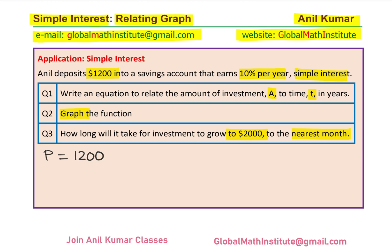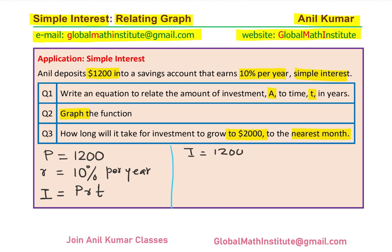Into a savings account. Now, the rate of interest is 10% per year — 10% per annum. Now what does that really mean? It means that with every year we get 10% of the amount deposited, and that is the interest earned. So interest is P times R times T. We can write interest as equal to $1200, which is the P value. The rate of interest is 10%, meaning 10 over 100. Always write the decimal equivalent, and T is the time. Every year that much interest will be gained, and this interest is equal to $120.